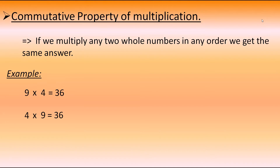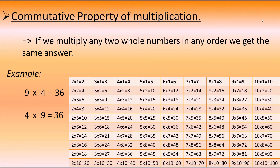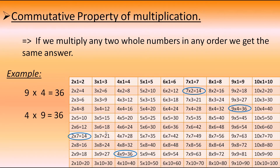You can understand this with the help of a table. In the table, 9 fours are 36, and same way 4 nines are 36. Similarly, 7 twos are 14 and 2 sevens are 14. Even though the places of these two numbers are interchanged, we get the same answer — that is the commutative property of multiplication.